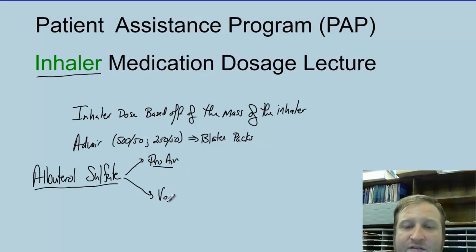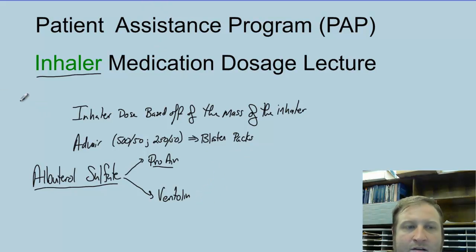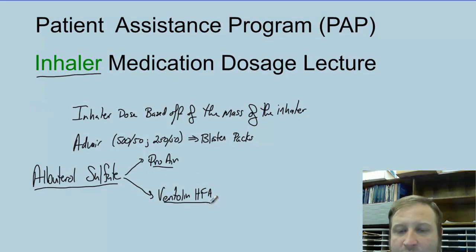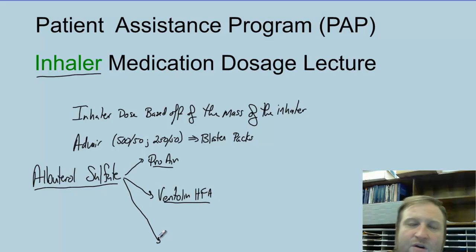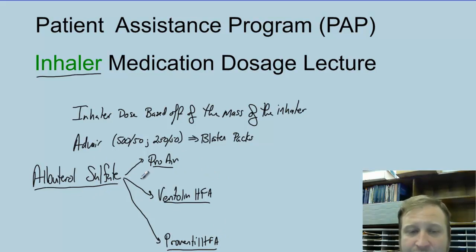The other one is Ventolin, and you're going to see Ventolin written as HFA. This is another form of ProAir. And this last form that we don't use as often is something called Proventil. But each one of these is the exact same thing — albuterol sulfate.